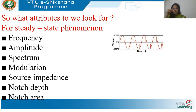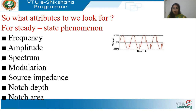Another attribute is the notch — in English, a notch means a hole. Notch depth and notch area are relevant parameters. These notches occur typically because of triggering power electronic devices: whenever there is a commutation — one switch turns on and another turns off — these notches occur. All these attributes are used to define different power quality problems.